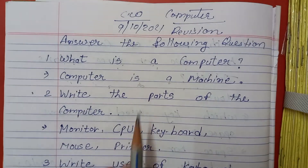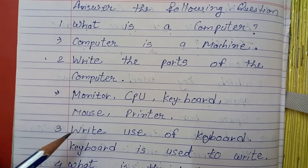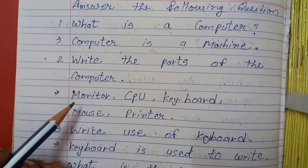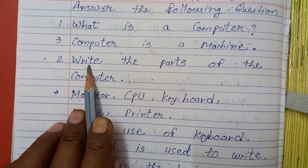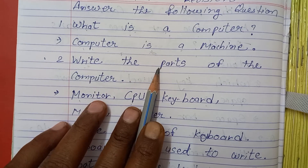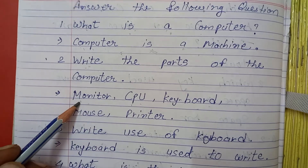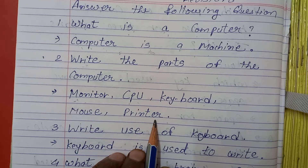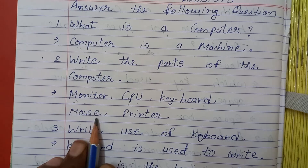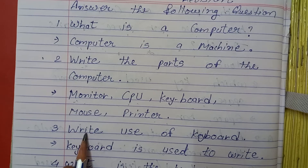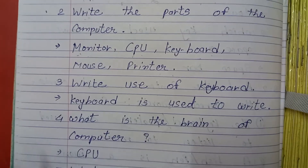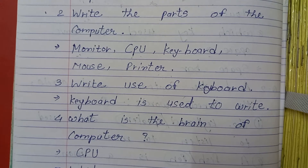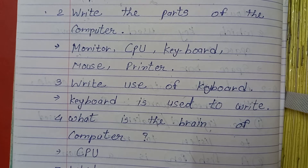Second question: Write the parts of the computer. The parts of the computer are: Monitor, CPU, Keyboard, Mouse, and Printer.